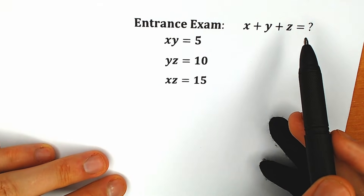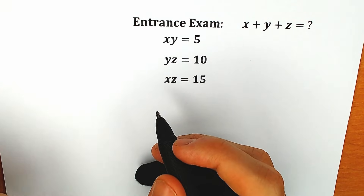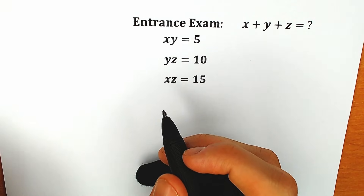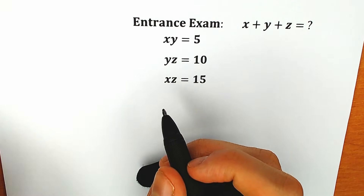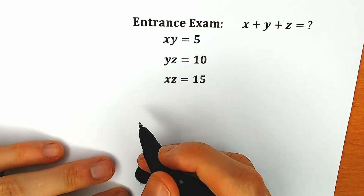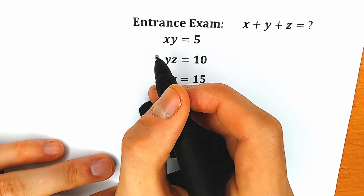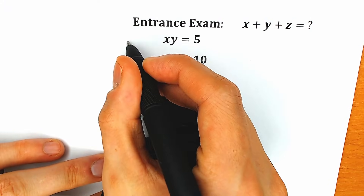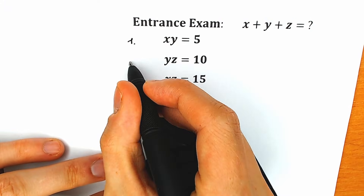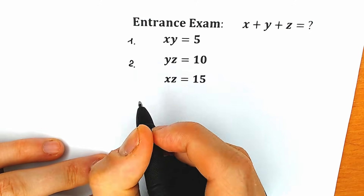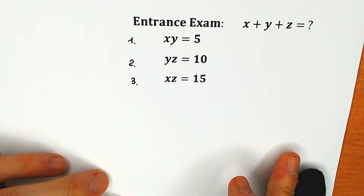If you have your thoughts about this question, write your notes in the comments below, and then we will check your answer — it will be really interesting. So let's call xy equals 5 the first equation, yz the second equation, and xz the third equation.